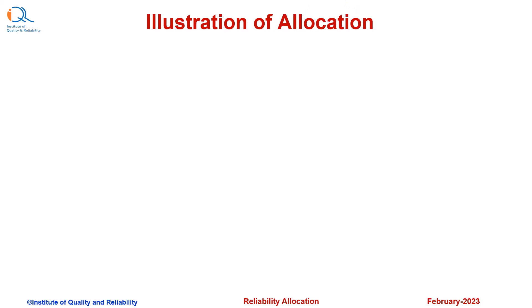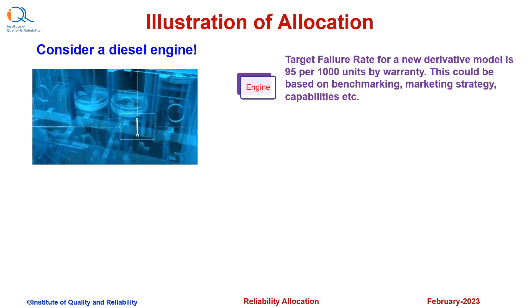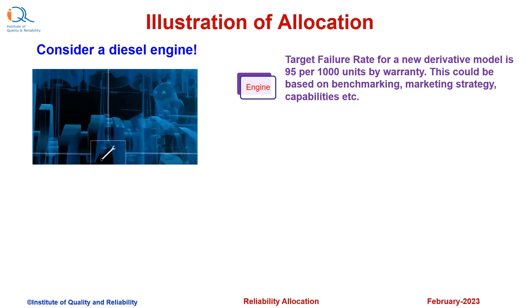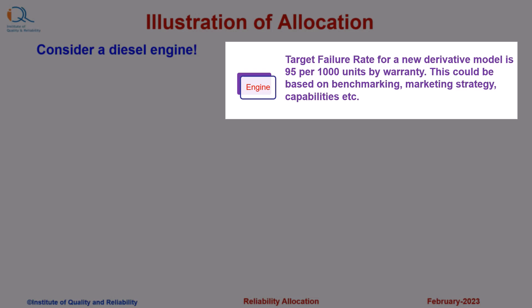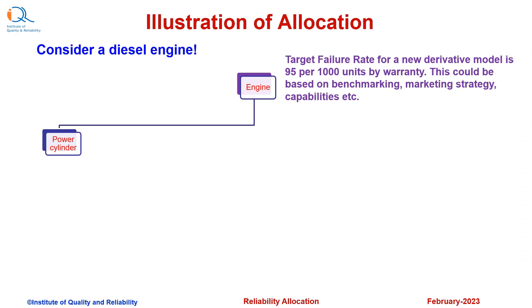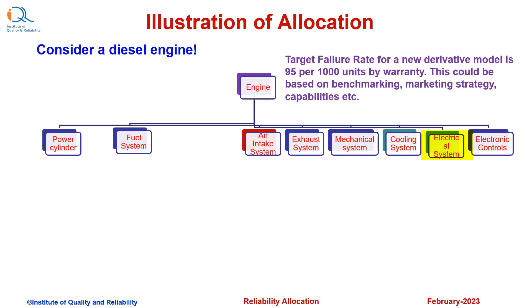Let us now see a practical example of reliability allocation. Consider a diesel engine. The target failure rate for a new derivative model of the engine is 95 per 1000 units by its warranty period. This could be based on benchmarking, marketing strategy, capabilities, etc. The engine has the following subsystems: power cylinder, fuel system, air intake system, exhaust system, mechanical system, cooling system, electrical system, and electronic controls. These are first-level subsystems of the engine.